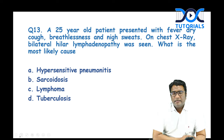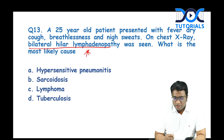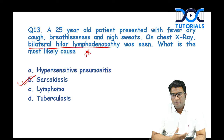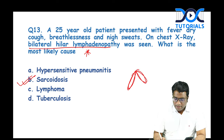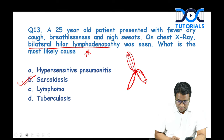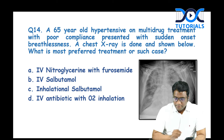A patient with fever, night sweats, dry cough, and chest X-ray showing bilateral hilar lymphadenopathy — the answer is sarcoidosis. Bilateral hilar and right paratracheal lymph nodes are classic features of sarcoidosis, even though the presentation may mimic tuberculosis.